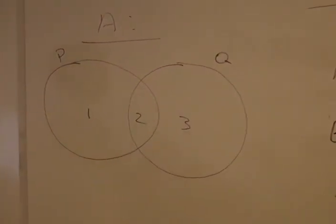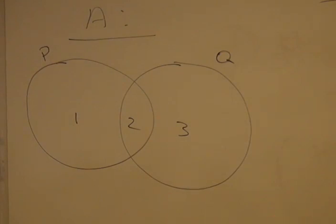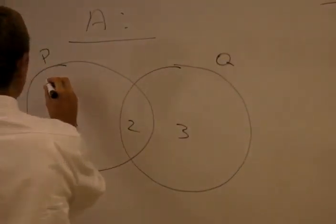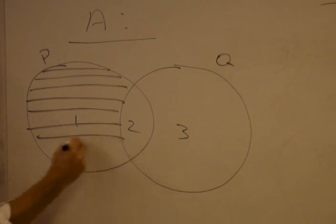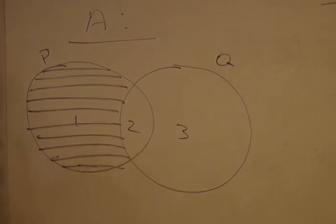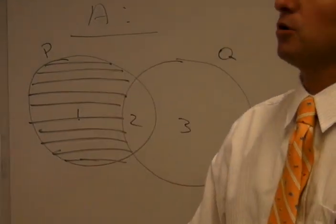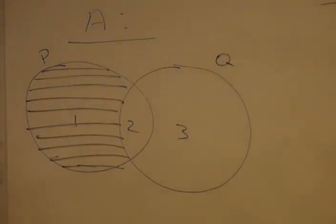And of course, our middle section represents things that are both P and Q. You'll recall that when we diagram all P or Q, we shade in all of this first section. And whenever we shade, we're shading the area in which there aren't any members. So when I'm saying all P or Q, I'm talking about all members of class P.